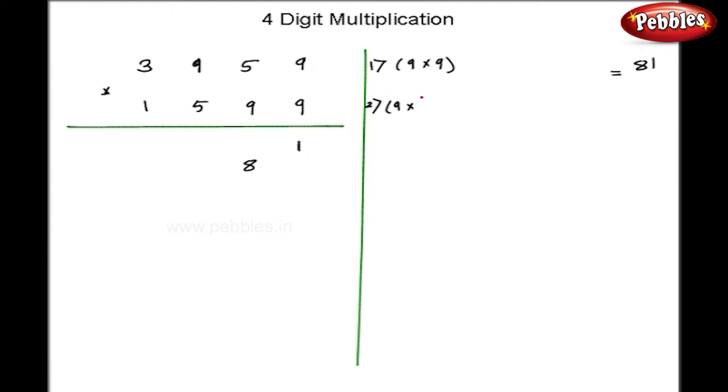At the second step, 9 into 5 plus 9 into 9. So, here I get 126. The 12 will be carry over and 6 I will write in the first row.